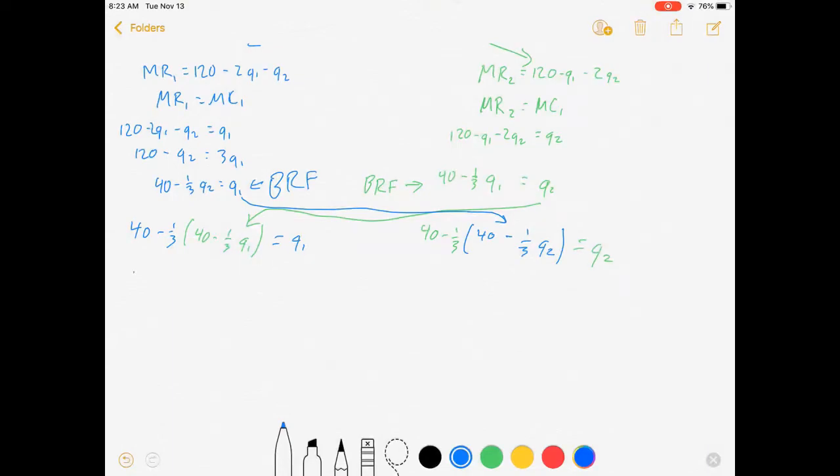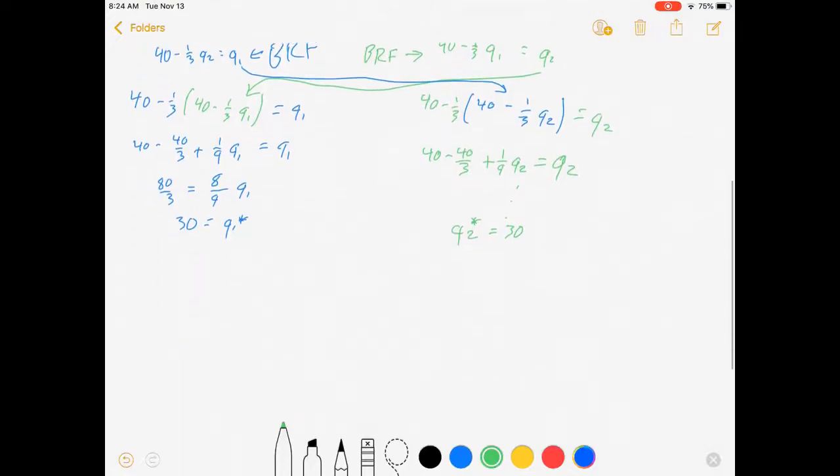Let's keep going. We got 40 minus 40 over 3 plus one over 9 q1 equals q1. That's 80 over 3 equals eight ninths q1, which means our firm one's equilibrium quantity is 30. Likewise for firm two, 40 minus 40 over 3 plus one over 9 q2 equals q2. It's all the same. q2 is 30. They've both chosen their quantities.